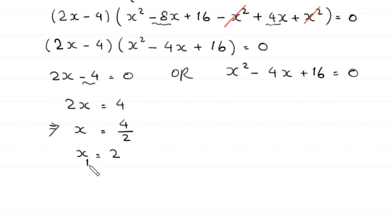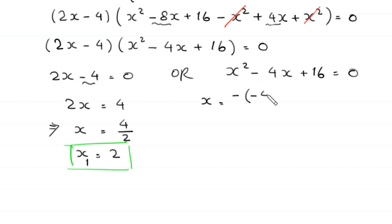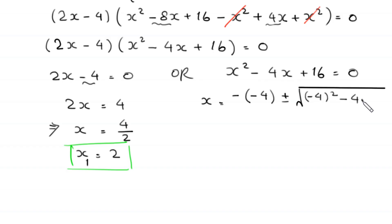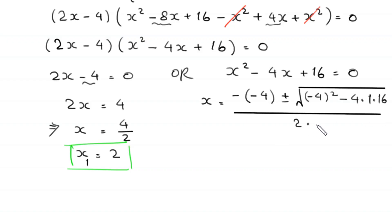Now from the quadratic equation x squared minus 4x plus 16 equals 0, according to the quadratic formula: x equals negative b, which is negative of negative 4, plus or minus the square root of b squared, which is negative 4 squared, minus 4 times a, which is 1, times c, which is 16, divided by 2 times a, which is 1.